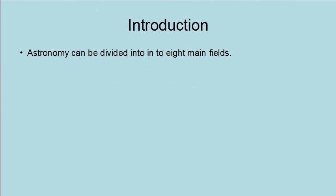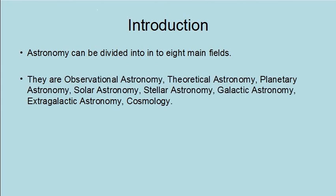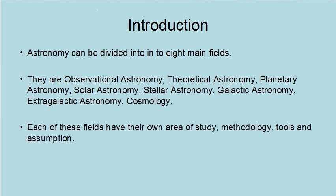Astronomy can be divided into eight main fields: observational astronomy, theoretical astronomy, planetary astronomy, solar astronomy, stellar astronomy, galactic astronomy, extragalactic astronomy, and cosmology. Each of these fields has its own area of study, methodology, tools, and assumptions.